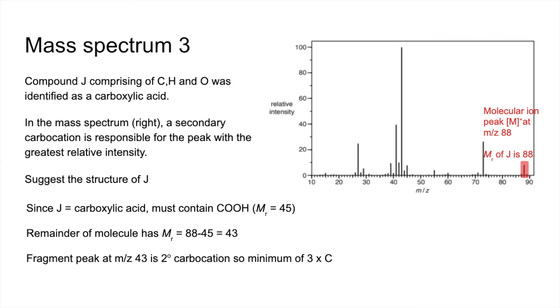It's going to have a minimum of three carbons because the C with the plus on has to have two carbons directly attached. Well, if you think about the mass of three carbons, that's 36. This is only worth 43, so another seven. So it's going to be C3H7.